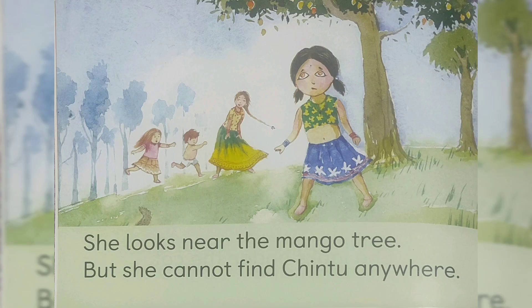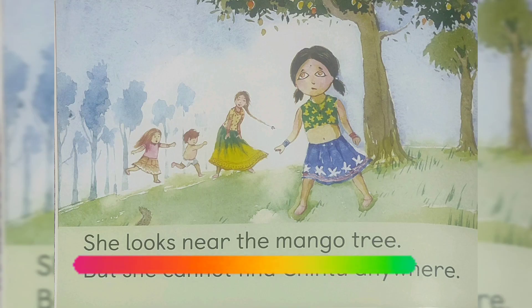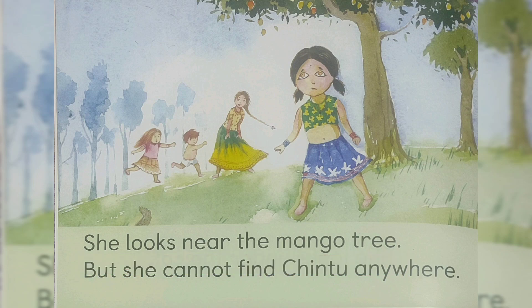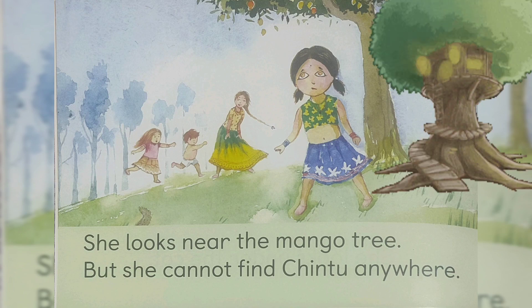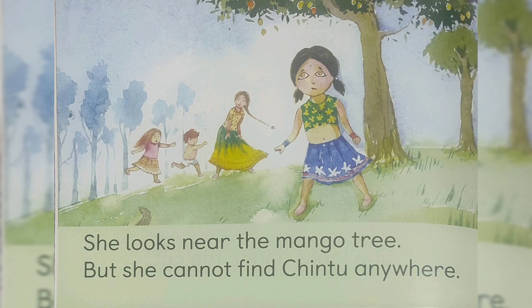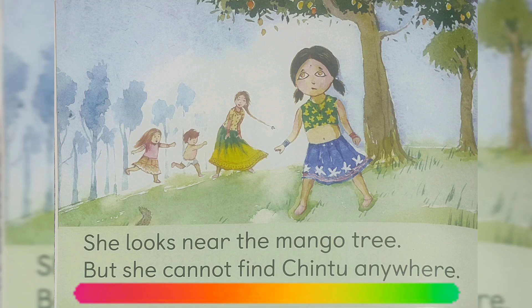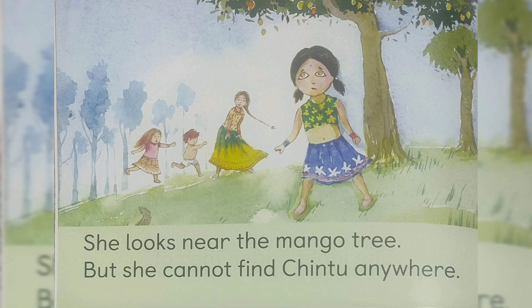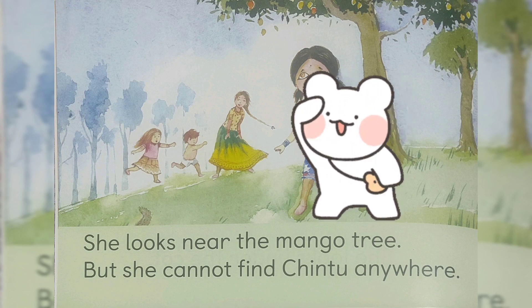She looks near the mango tree. Sita Chintu ko aam ke ped ke paas dekhti hai. But she cannot find Chintu anywhere. Lekin usko Chintu kahi nahi mila.